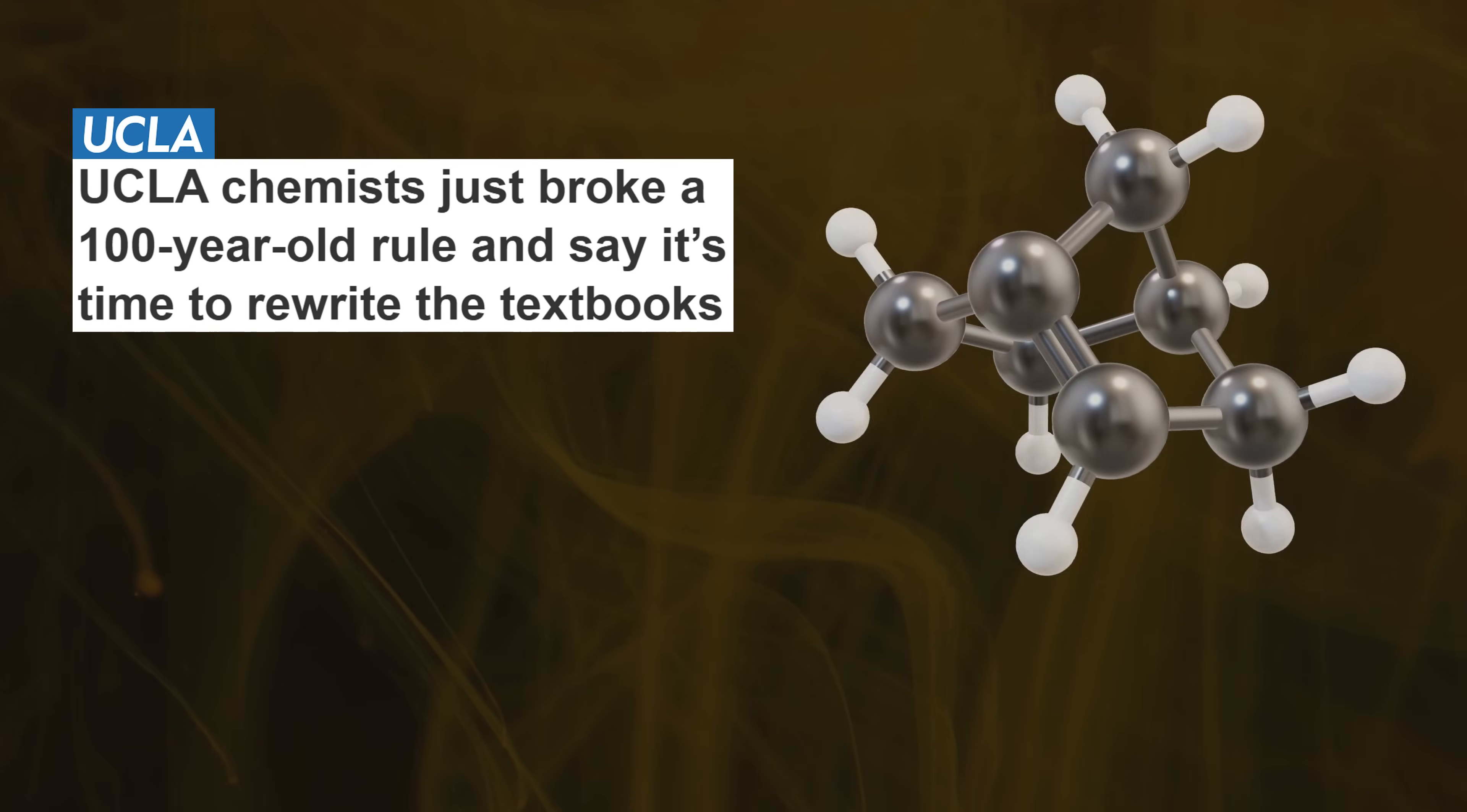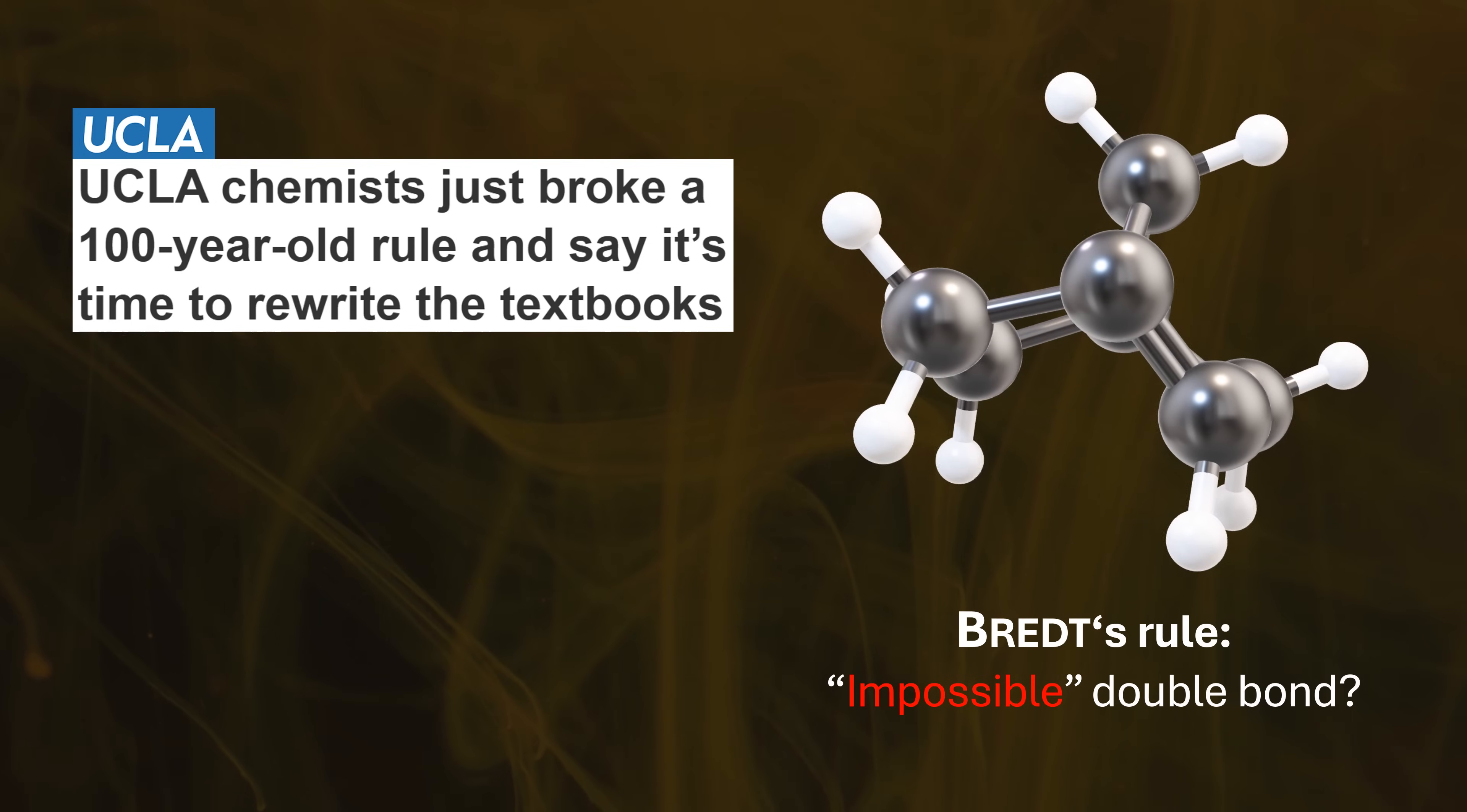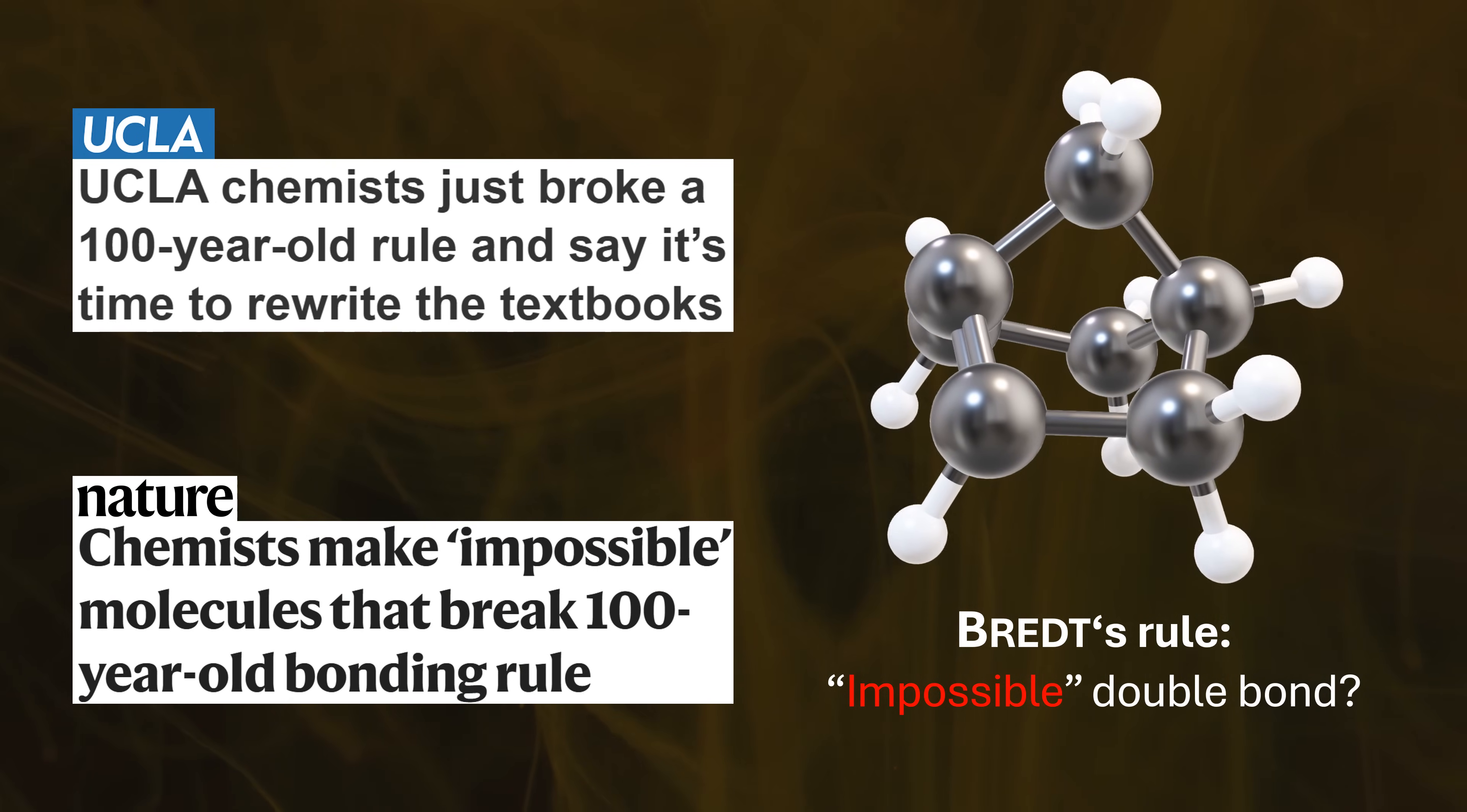Organic chemistry seems to get more complicated by the day. Chemists allegedly just broke an important bonding rule and created impossible molecules. But did they really?